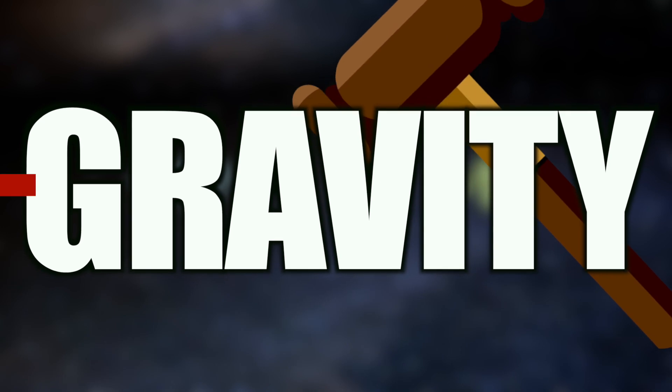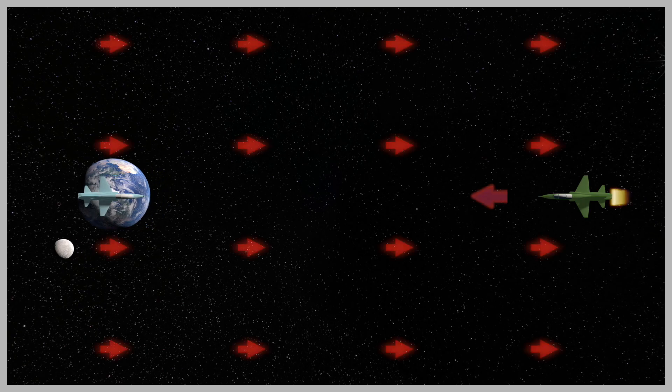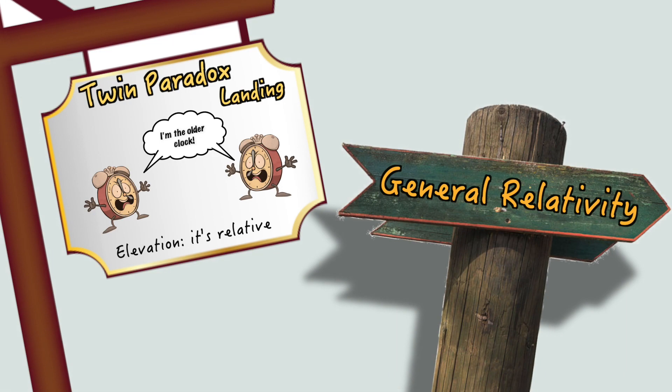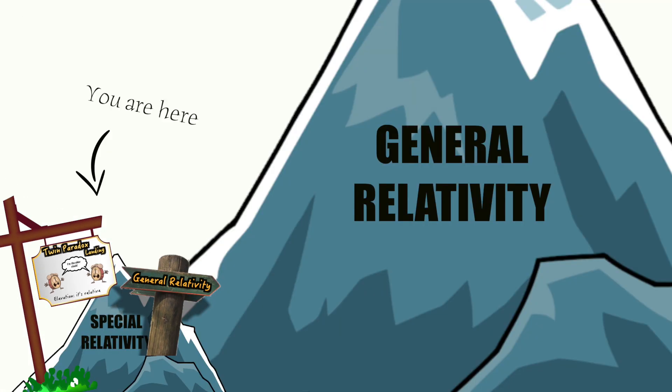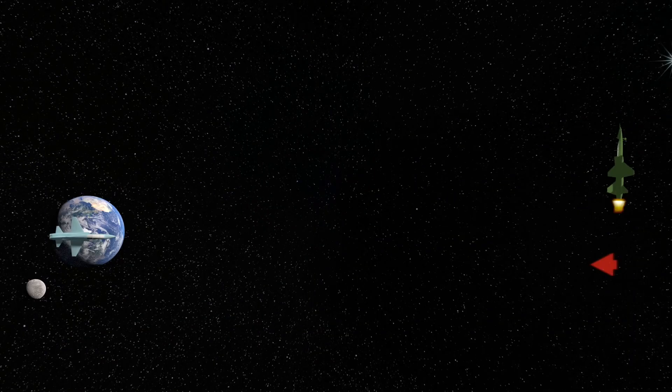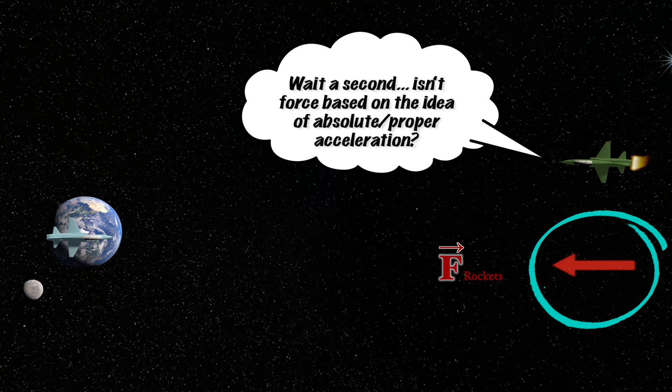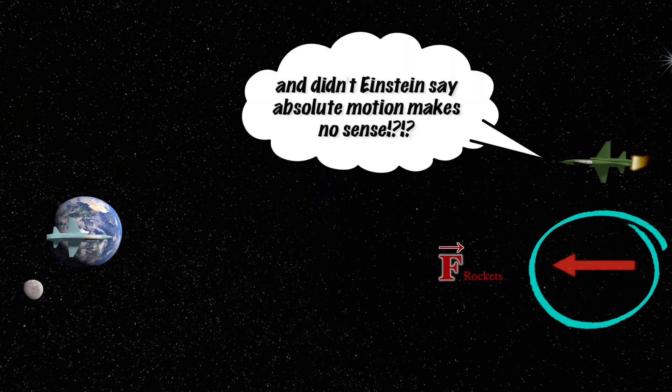So our final verdict: gravity does not resolve the paradox. Incorporating it into the picture gives us some insight into the equivalence principle and points us in the direction of general relativity. But the paradox itself never leaves the framework of special relativity. And so those questions that continue to plague us, namely, what it actually means to say that force is the agent of asymmetry, and whether that's ultimately even correct, we will continue to explore in future videos.